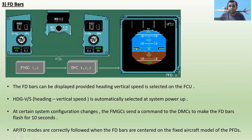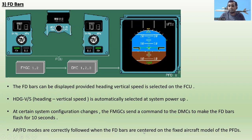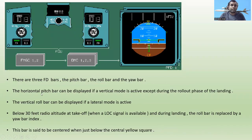The flight director bars can be displayed provided Heading/Vertical Speed is selected on the Flight Control Unit. Heading/Vertical Speed is automatically selected at system power-up. At certain system configuration changes, the FMGCs send a command to the DMCs to make the flight director bars flash for 10 seconds. Autopilot flight director modes are correctly followed when the flight director bars are centered on the fixed aircraft symbol of the PFD. There are three flight director bars: the pitch bar, the roll bar, and the yaw bar. The horizontal pitch bar can be displayed if a vertical mode is active, except during the rollout phase of landing.